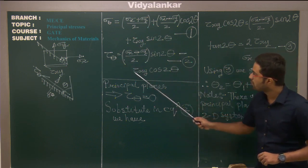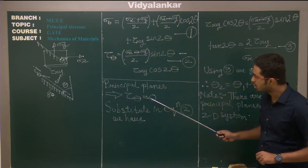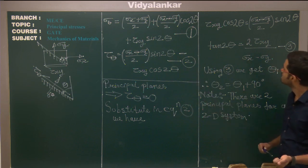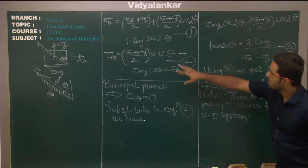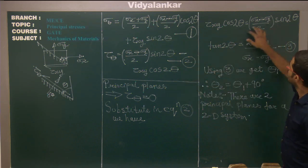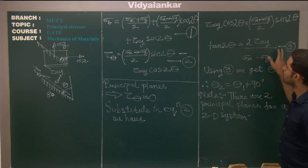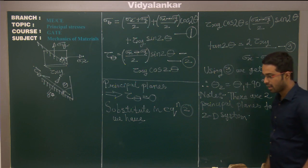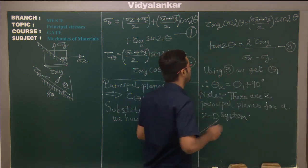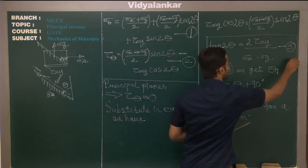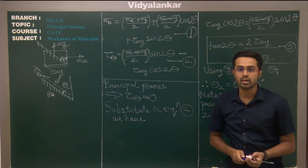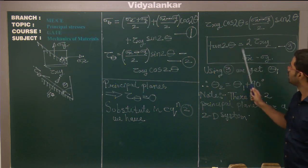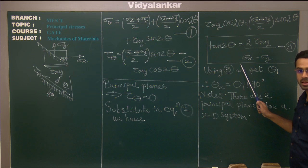According to the definition of principal planes which says those are the planes where shear stresses are zero, I equate tau theta to zero and substitute this condition in equation two. After rearranging, I get tan 2 theta equals two times tau xy divided by (sigma x minus sigma y). This is an important equation that gives you the location of principal planes.